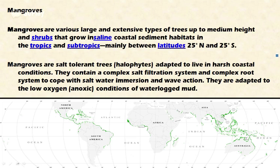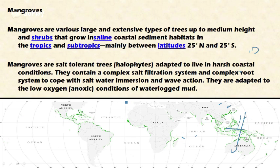Mangroves are various large and extensive types of trees growing up to medium height in the form of shrubs, that grow in saline coastal sedimentary habitats in the tropic and subtropical areas of the world, mainly between latitudes of 25 degrees north and south of the equator. As you can observe on this map, mangroves are extensively present between 25 degrees north and south of the equator. Mangroves have various adaptive mechanisms to suit coastal conditions. They are salt-tolerant trees called halophytes, adapted to live in harsh coastal climatic conditions and low oxygen conditions of waterlogged soils.